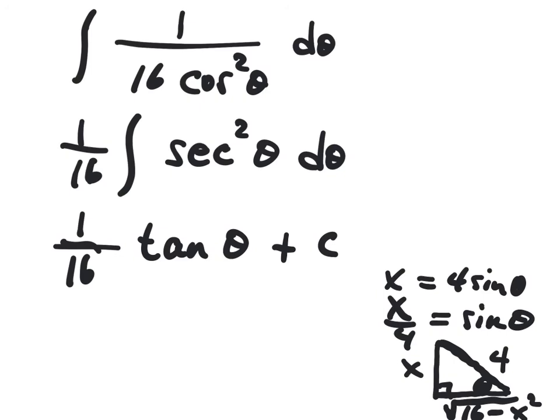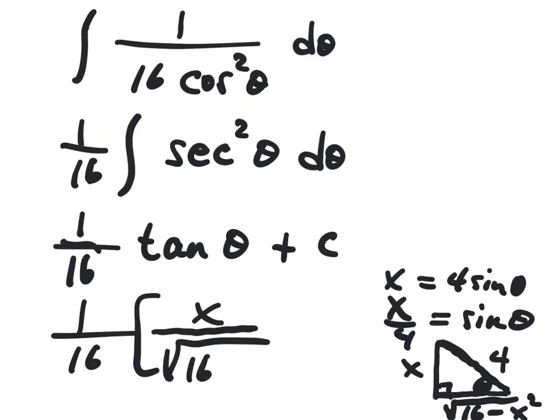And tangent of this triangle is opposite over adjacent, so that's x over square root of 16 minus x squared, plus c.